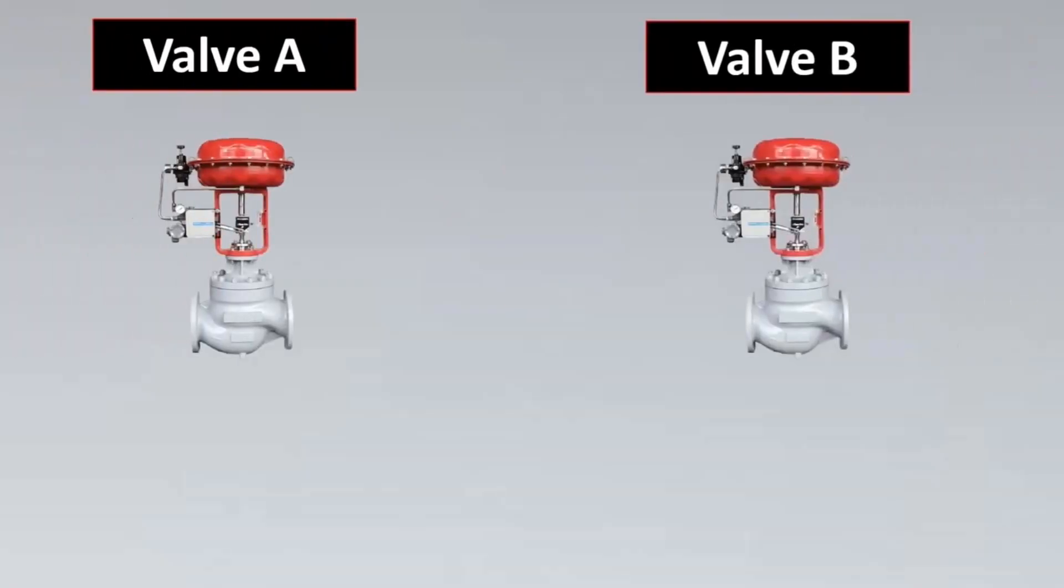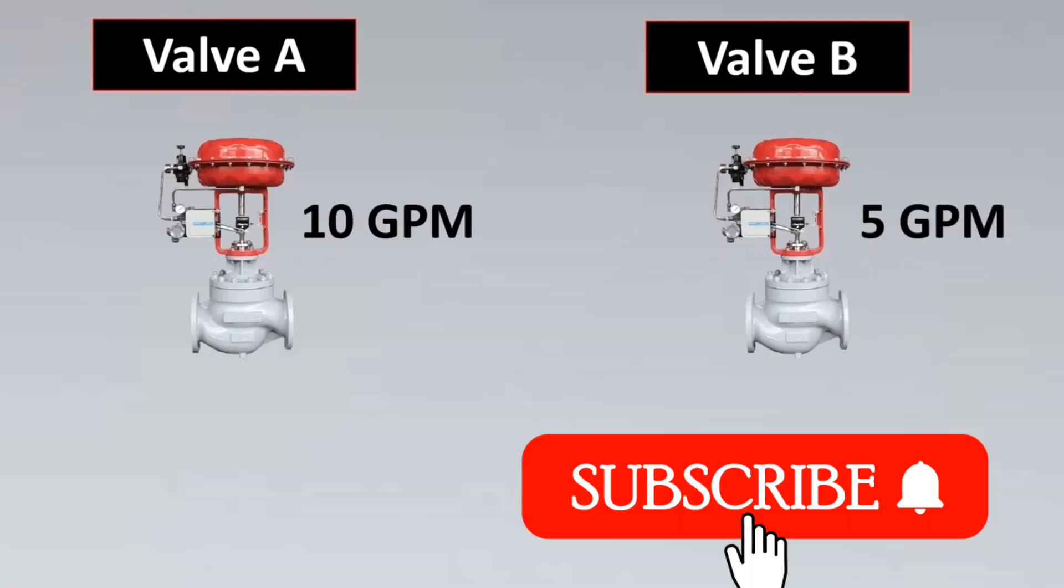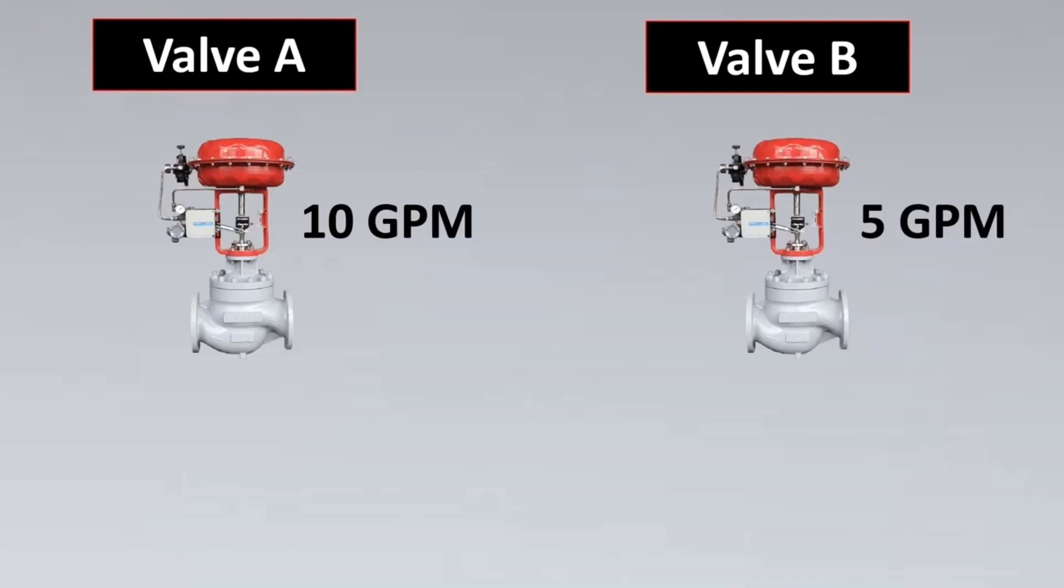Valve A has 10 GPM and valve B has 5 GPM. We cannot say that valve A has higher flow capacity because there could be the case that both valves are made of the exact same construction and size, but the pressure drop across the first valve is 15 psi while the second valve is just 1 psi.